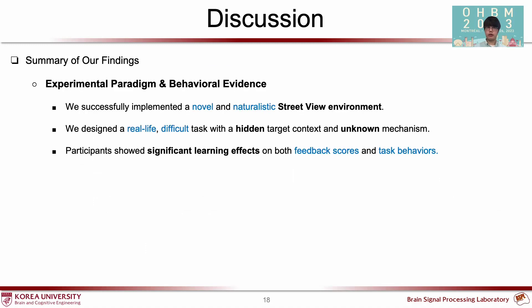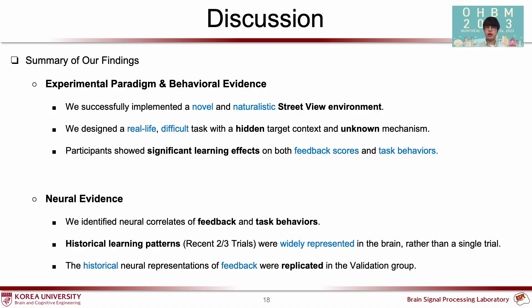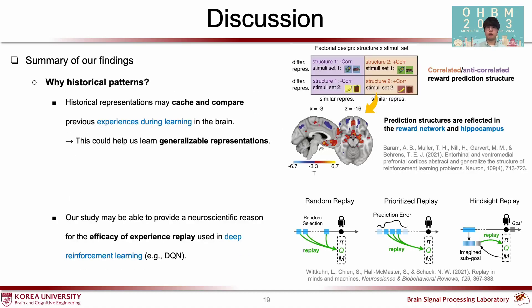In summary, we successfully implemented a naturalistic real-life task paradigm and showed participants can perform the difficult task. Furthermore, we found neural evidence of historical learning patterns in the brain and showed reproducibility of historical feedback representations. We think historical representations help cache and compare previous learning episodes, forming generalizable representations especially when tasks have hidden structures. Furthermore, we think historical representations are similar to experience replay used in deep reinforcement learning, which could explain why experience replay is effective.